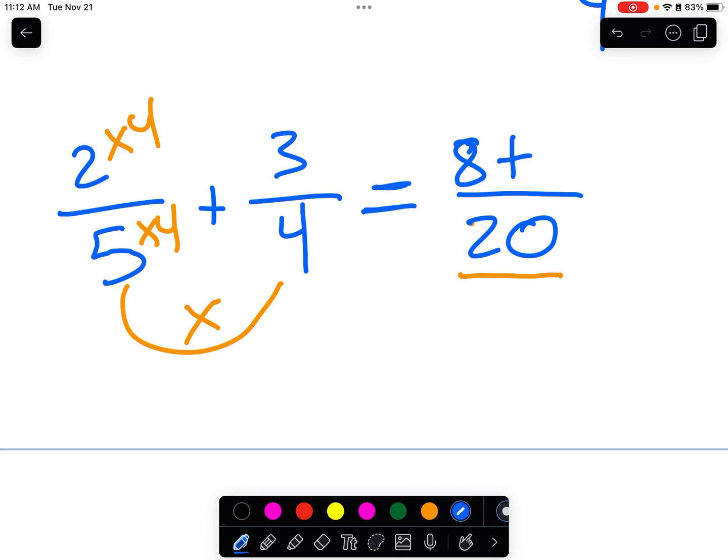Then we're going to add the other fraction. So here, we did 4 times 5 to get 20. And then we do 3 times 5. Because whatever we do to the denominator, we do to the numerator when we're adding like this.